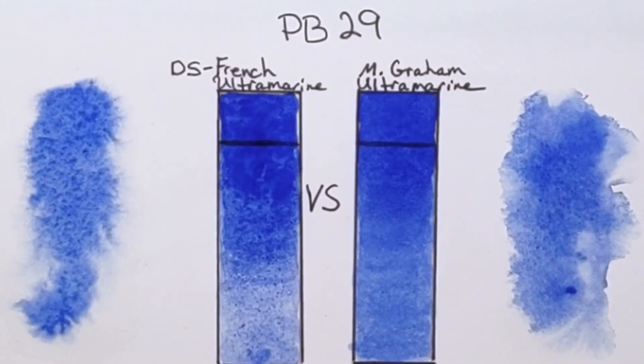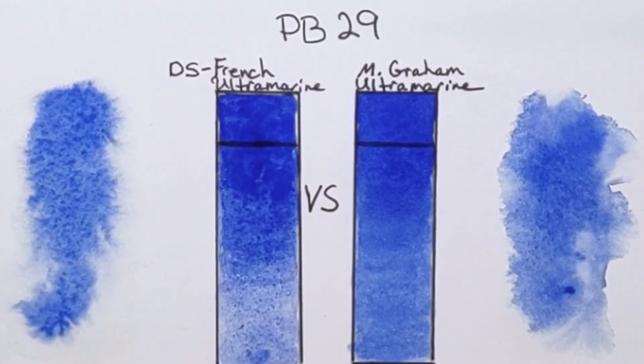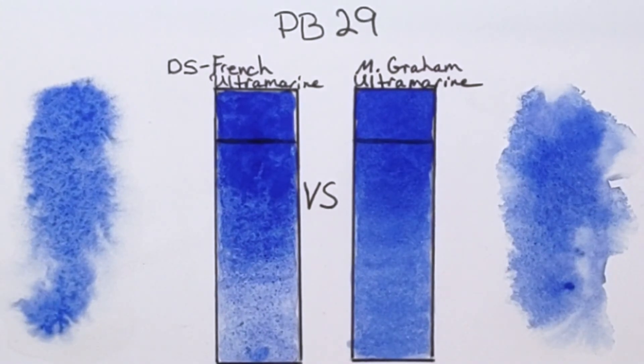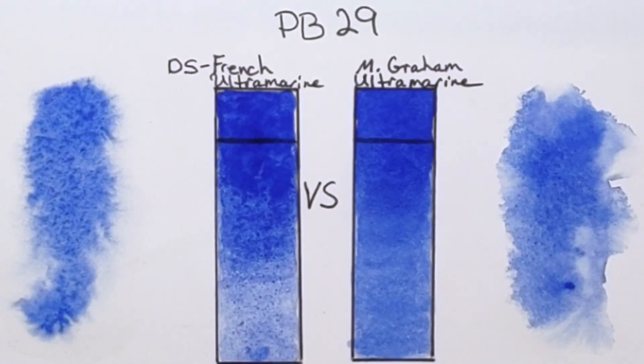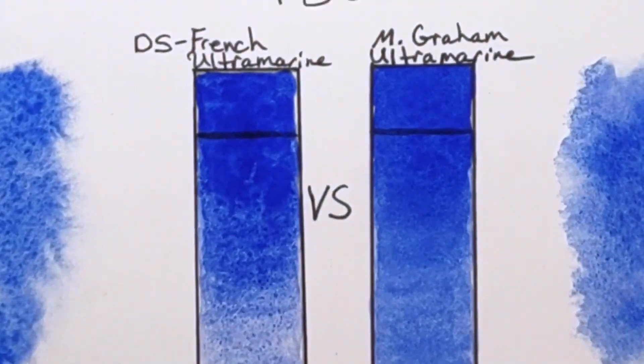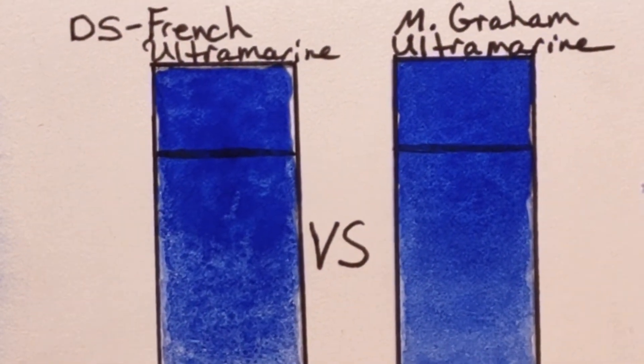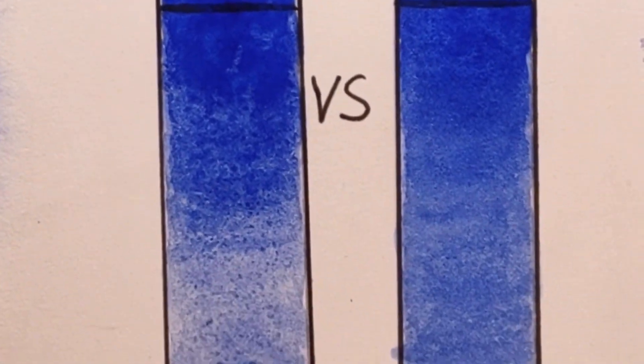Okay, so here we are after it's dried. My first thoughts: this was a whole lot smoother. There's much more granulation in the Daniel Smith one. I do love this effect I got over here with the M. Graham. Other than that, both very transparent. Let me get a little bit closer for you. Both very transparent color, which I really like.